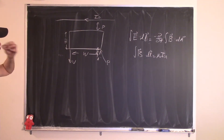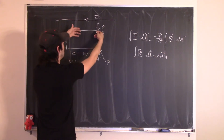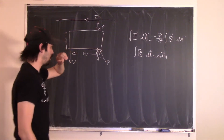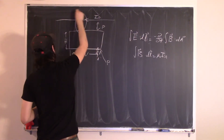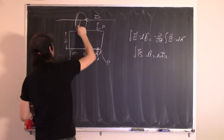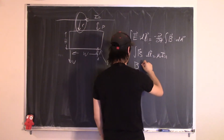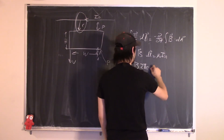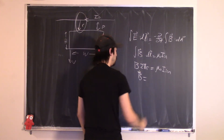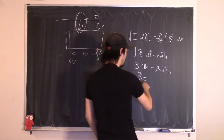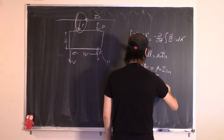We use Ampere's Law — the integral of B dot dL equals mu-naught times I-in — to find the magnetic field. We draw Amperian loops of radius R, so B times 2πR equals mu-naught times I-in. Solving for B gives B equals mu-naught I-naught divided by 2πR.